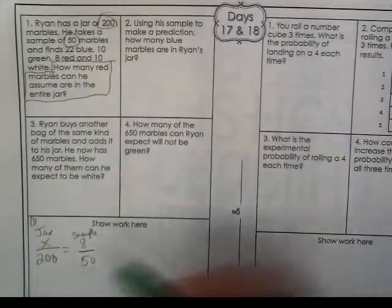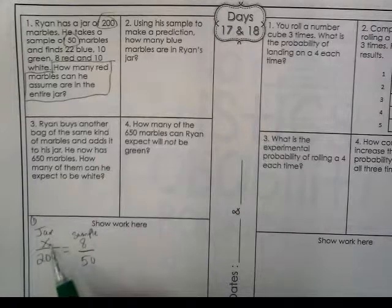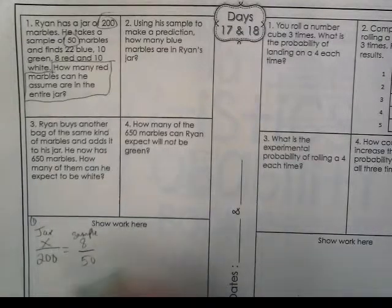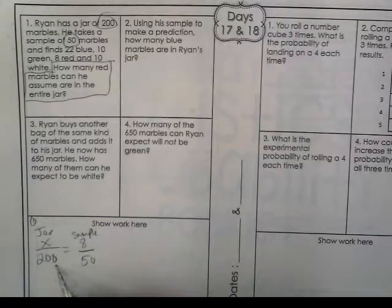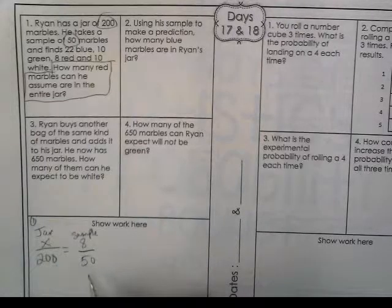So once I have this set up, I'm looking for how many red marbles we think are in the jar based on his sample. We're going to either cross multiply, 8 times 200 divided by 50, right? That's one way we could do it.